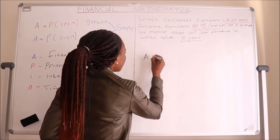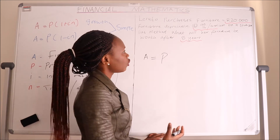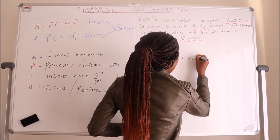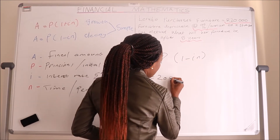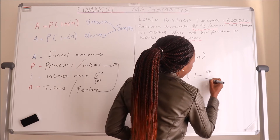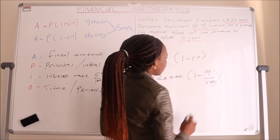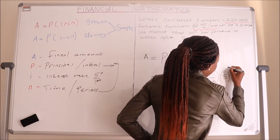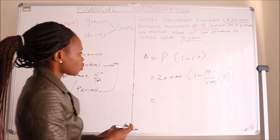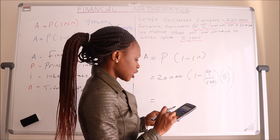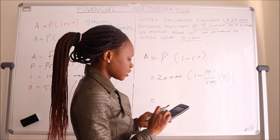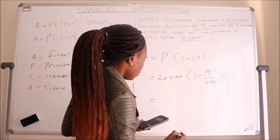So A equals P into (1 minus IN) — simple decay, because the value of the furniture will be depreciating over time. The original amount P is twenty thousand, I is nine divided by one hundred, and N is five years. Let me put this into a calculator: twenty thousand into (1 minus nine over one hundred multiplied by five), which gives eleven thousand.